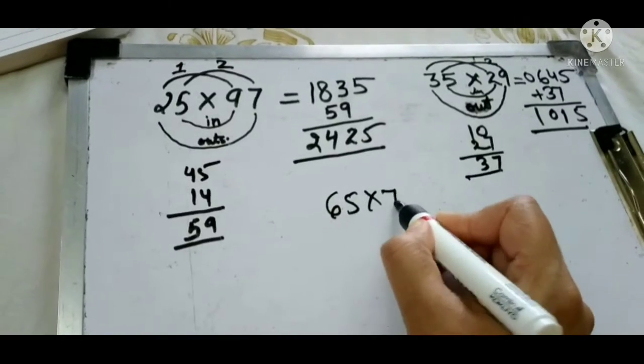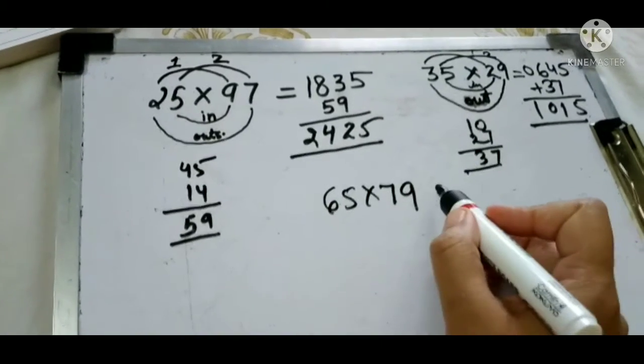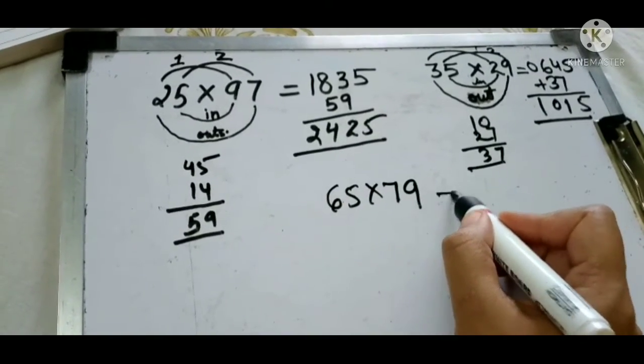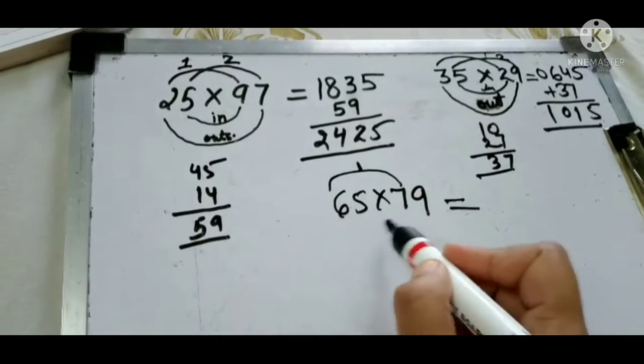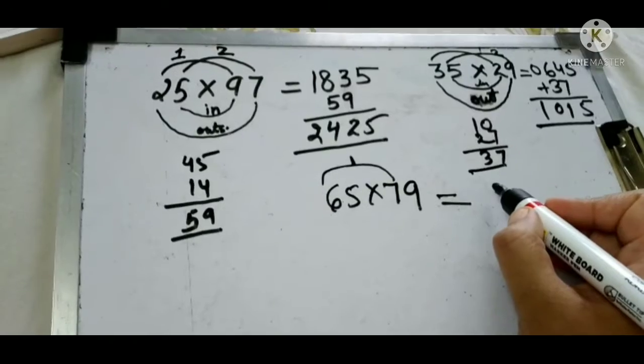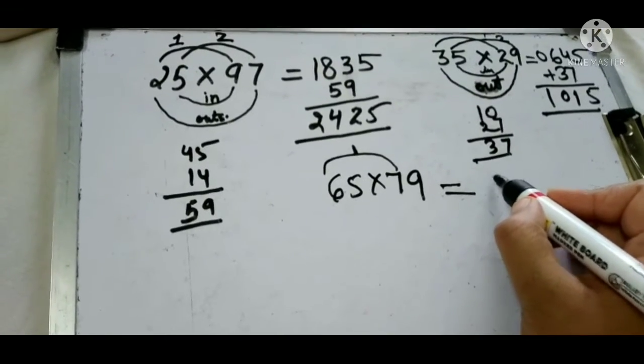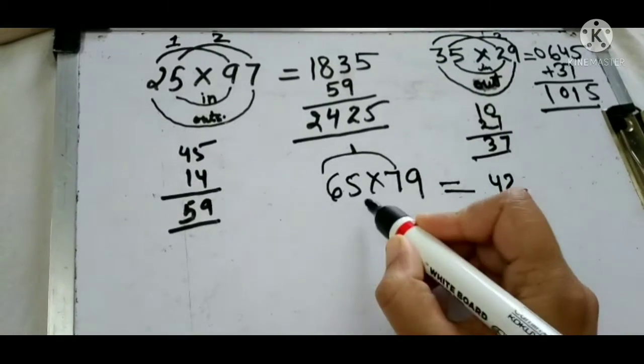Now one more example I would like to show you. What we do is first, this is first of both numbers, so 6×7 is 42. Then second, 45.